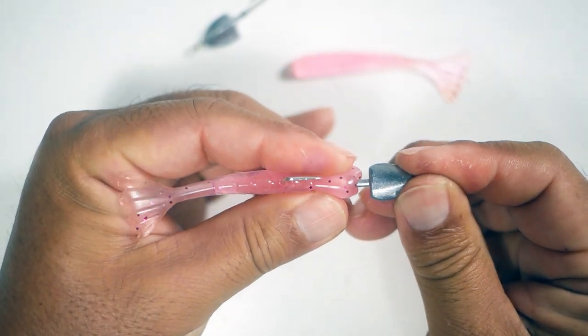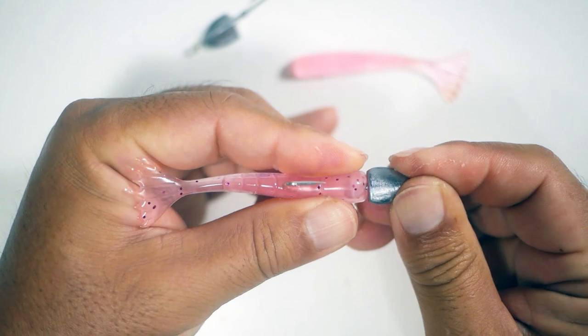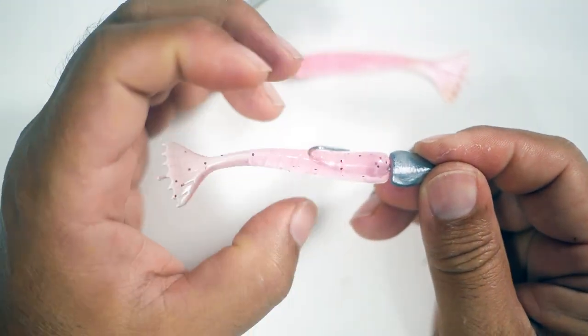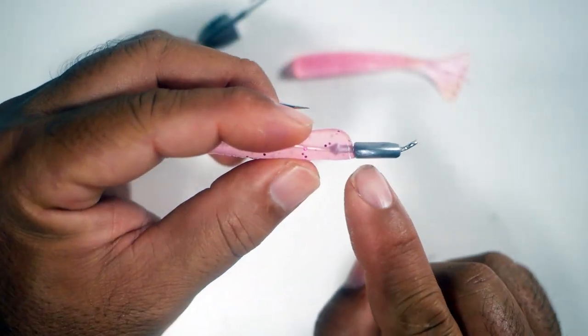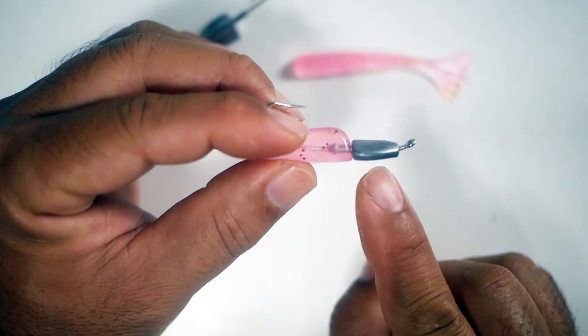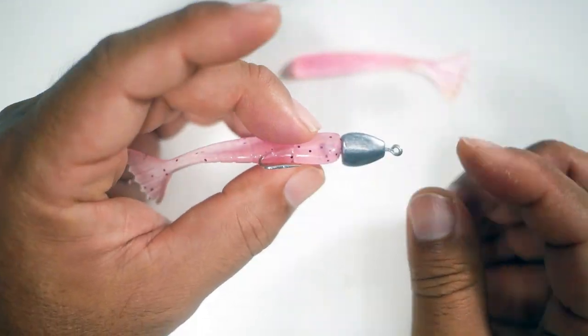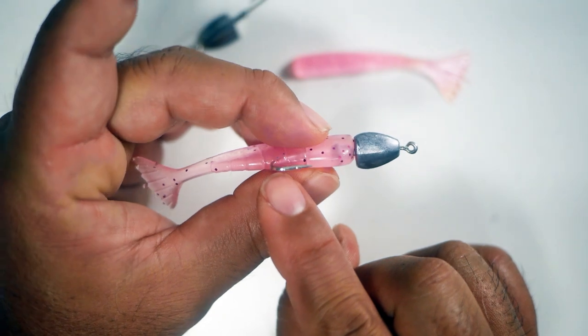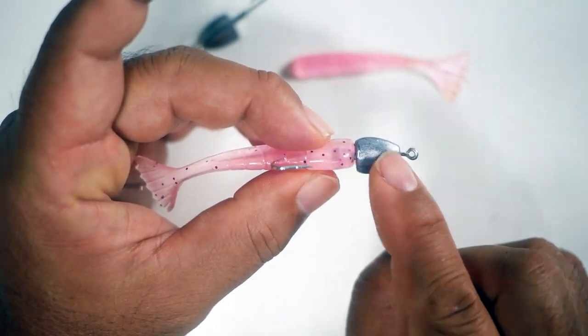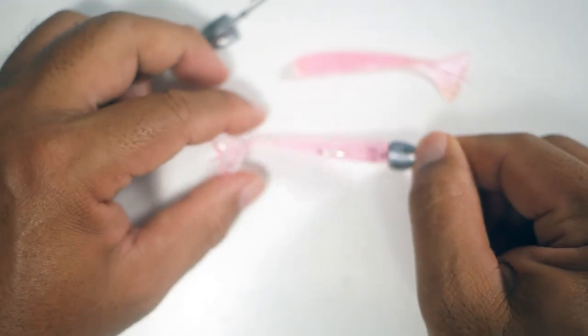That'll allow you to push on the shrimp and butt it up. You can see that we're right flush with the bottom. We're squared up, center spine, center of the hook shank. And there you go, that's perfectly rigged.